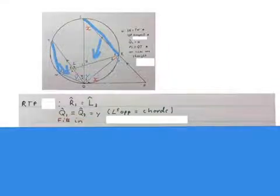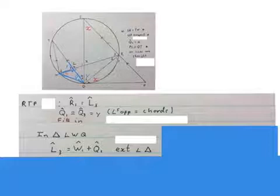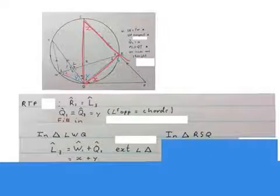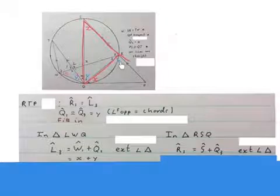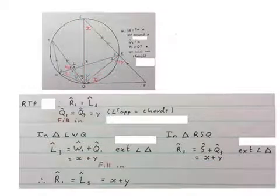And you fill it in on the picture. Then you say in triangle LWQ, l3 is equal to w1 plus q1, exterior angles of a triangle, and that equals to x plus y. In triangle RSQ, angle r1 is equal to angle s plus angle q3, also exterior angles of a triangle. That's also equal to x plus y. So r1 is x plus y and l3 is x plus y. Then you just finally say angle r1 is equal to angle l3 because they're both equal to x plus y.